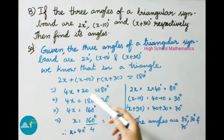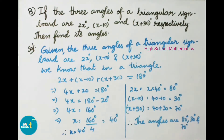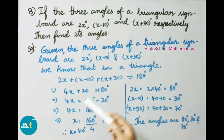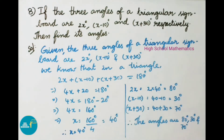Combining like terms: 4x plus 20 equals 180 degrees. Transposing, 4x equals 180 minus 20, that is 160 degrees. Dividing both sides by 4, x equals 160 divided by 4, so x equals 40 degrees.